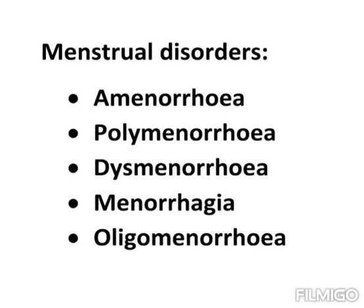The second menstrual disorder is polymenorrhea. Polymenorrhea is a term used to describe a menstrual cycle that is shorter than 21 days. That means instead of one menstrual cycle, that particular person will undergo more than one menstrual cycle in a period. It may be due to hyperactivity of the anterior pituitary gland causing frequent ovulation, psychological disturbances, and malnutrition.